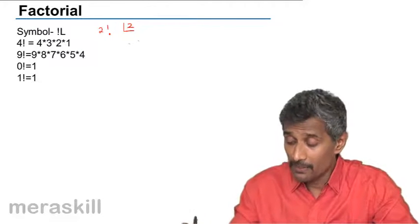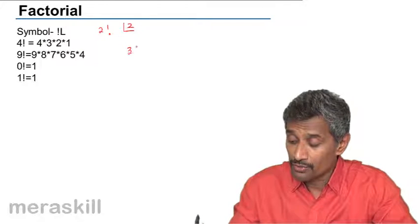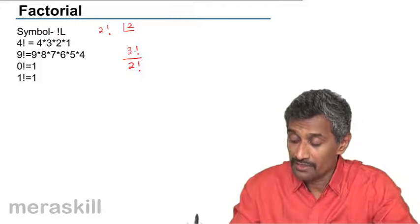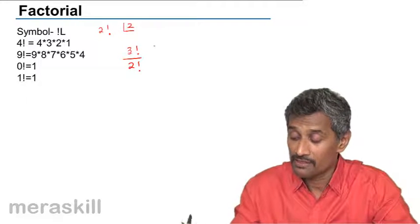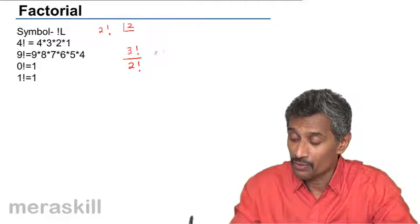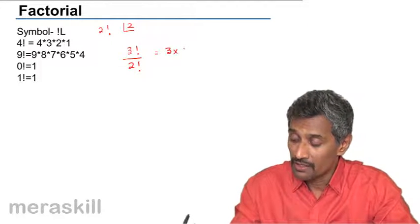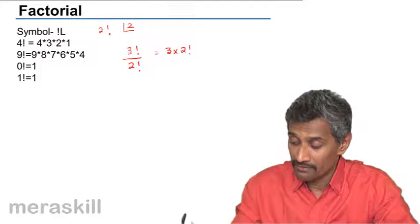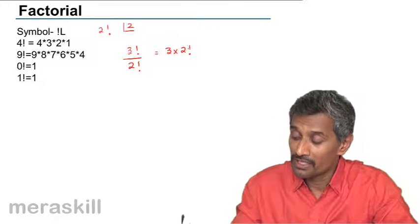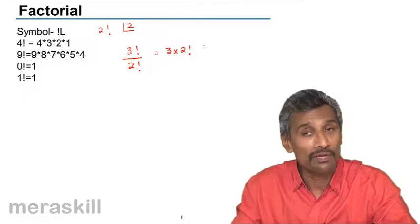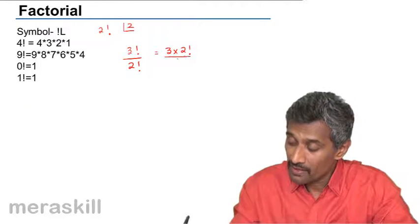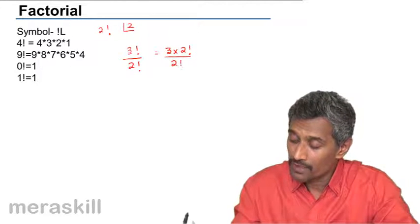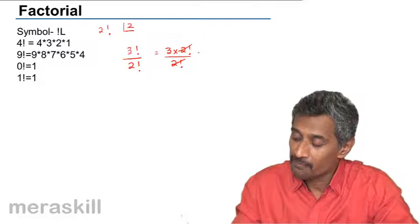For example, suppose you have 3! divided by 2!. We split this: 3! is nothing but 3 × 2!, because 3! = 3 × 2 × 1 = 3 × 2!. So 3!/2! = 3.